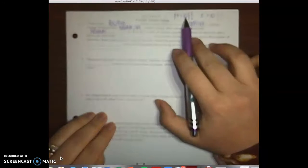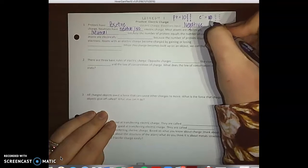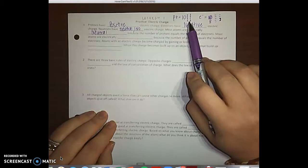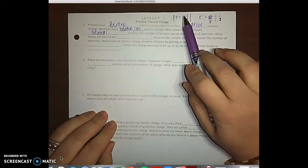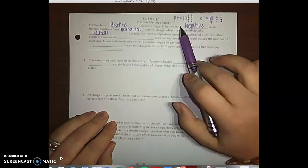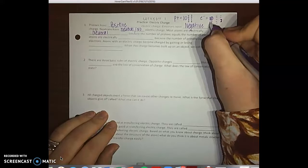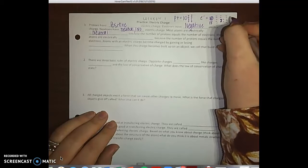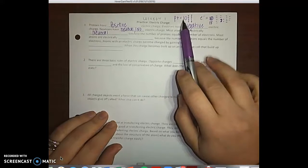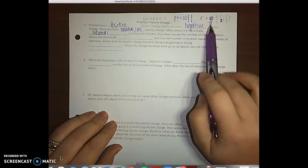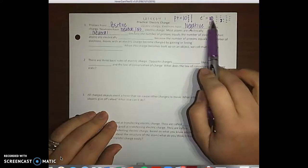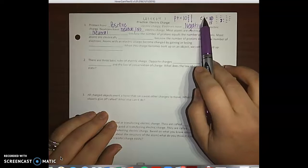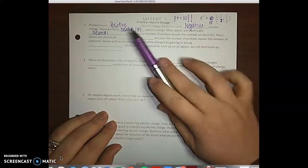But if I had ten protons and only eight electrons, that means I have two more positive charges than I have negative charges, so the atom would be a positive electrical charge. Now if I had 18 electrons and only eight or ten protons, that means I have eight more electrons than I have protons, so I would have eight more negative charges than I have positive charges, so my atom will be electrically negative. But if it's the same it's going to be neutral.